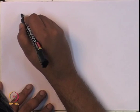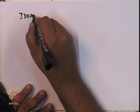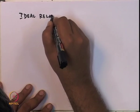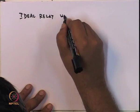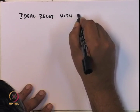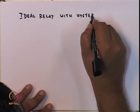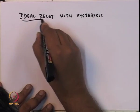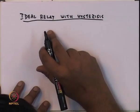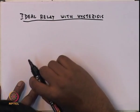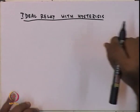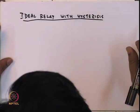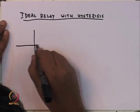Let us first look at what one calls an ideal relay with hysteresis. This is a more complicated nonlinearity that has a time-varying response — it is not time-invariant. Let me draw what the response looks like.